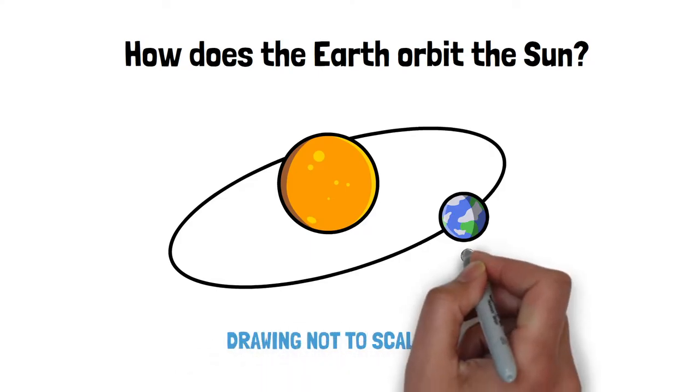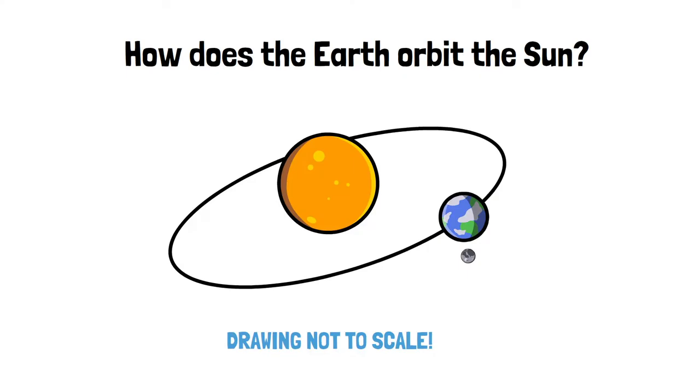The Earth is not orbiting alone. The Moon is also present and orbiting the Sun with the Earth.